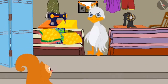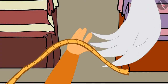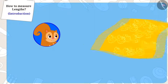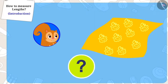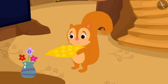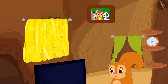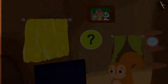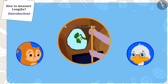Chanda again went to uncle's shop and this time bought a cloth as long as the length of the rope with which Appu had measured the window. Children, was Chanda able to get the exact length of the cloth for her window? Yes! This time when Chanda hung the cloth on her window, it was the exact length of her window. But how did this happen?